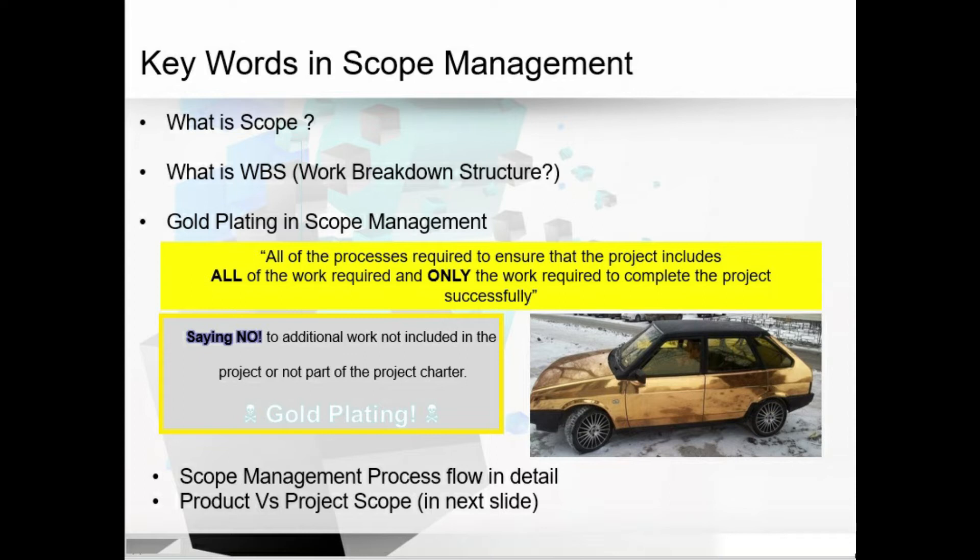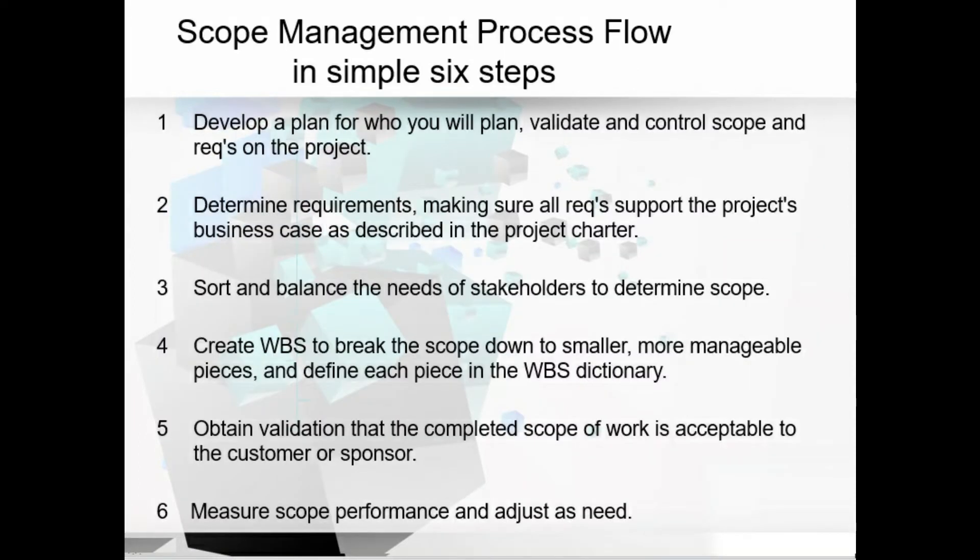Let me explain the six steps of the scope management process flow. Step one: develop a plan for how you will plan, validate, and control scope and requirements. Step two: determine requirements and make sure all requirements support the business case as described in the project charter. Step three: sort and balance the needs of stakeholders to determine the scope. Step four: create the work breakdown structure to break scope into smaller, manageable pieces and define each piece in the WBS dictionary. Step five: obtain validation that the completed scope of work is acceptable to the customer or sponsor. Step six: measure scope performance and adjust as needed.